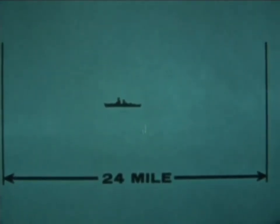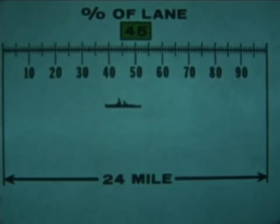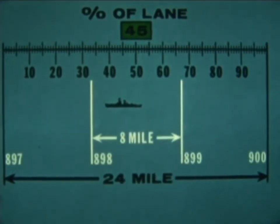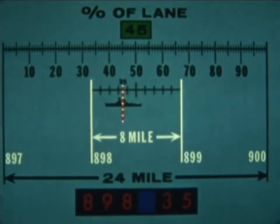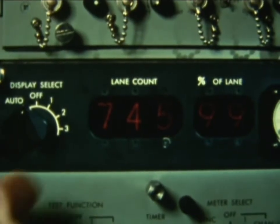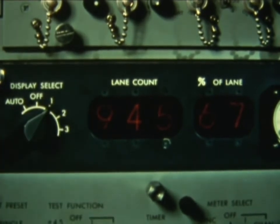By dead reckoning or other navigational means, we can establish our rough position within one of the 24-mile lanes. Then, a percent of lane reading immediately tells us in which part of the large lane the ship is located. Since the 24-mile lane corresponds to three 8-mile lanes, knowing the percent of lane enables us to place the ship in one of the 8-mile lanes. And we can reset or reinitialize the receiver accordingly and resume automatic tracking.